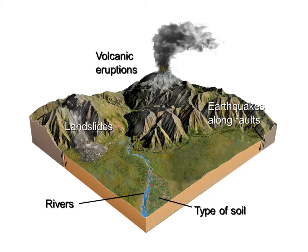So those would all fit on your notes packet under our five ways that geology affects where we live: number one, landslides; number two, volcanic eruptions; number three, earthquakes along faults; number four, types of soil; and number five, rivers.